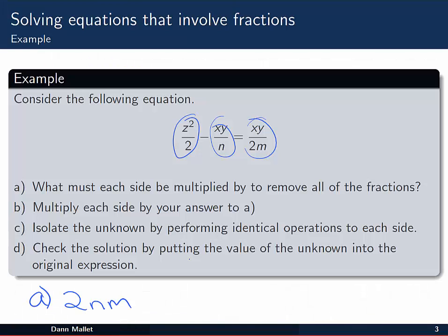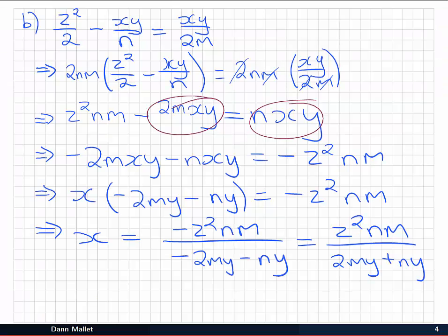Part D says to check the solution by substituting the value of the unknown back into the original expression. I'm going to leave that one for you to try later. Essentially take that x that we've just found and substitute it back here into the original. You should be able to expand out and show that both sides are equal to the same thing.